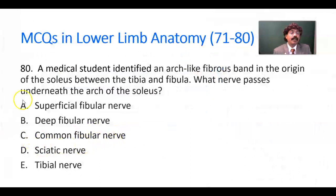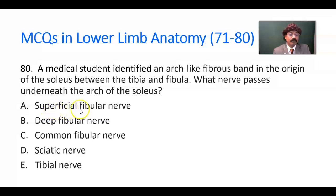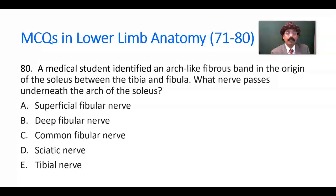Question number 80. A medical student identified an arch-like fibrous band in the origin of the soleus between the tibia and fibula. What nerve passes underneath the arch of the soleus? Options include superficial fibular nerve, deep fibular nerve, common fibular nerve — these all go toward the fibula. The sciatic nerve splits at the top of the popliteal fossa into tibial and common fibular nerve, so it does not pass under the soleus. The answer is the tibial nerve, which passes underneath the arch-like origin of the soleus muscle.